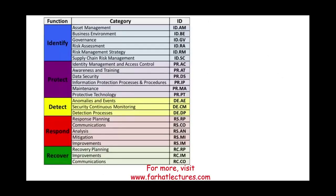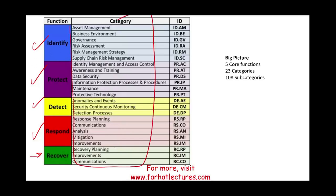In the prior session, we looked at the identify function — identifying your assets, the protect function — protecting your assets, detecting any intrusion, and how to respond. In this session, we look at the recovery function. Once again, we have five core functions, 23 categories. We're covering today the last three categories, 108 subcategories, and many references.